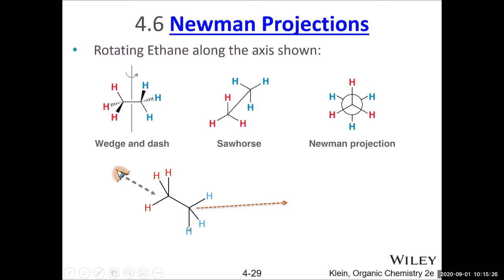Put your eyes close to the red hydrogens and you will see the structure becomes the Newman projection. The hydrogen at 12 o'clock stays at 12 o'clock. The blue hydrogens on the far side are behind the white circle. The white circle can be treated as representing two carbons superimposed on each other — this we call fully eclipsed.